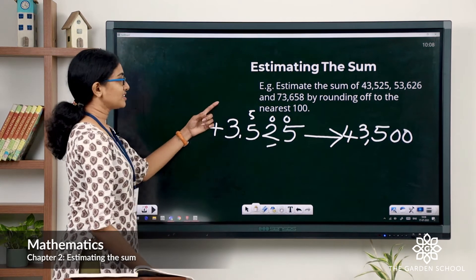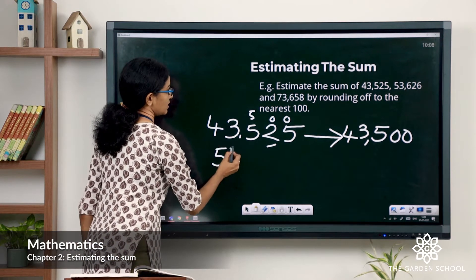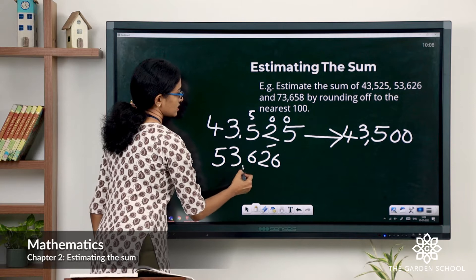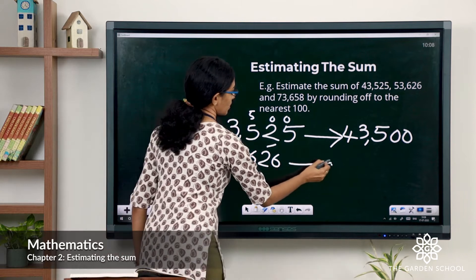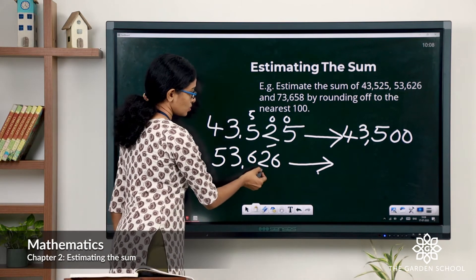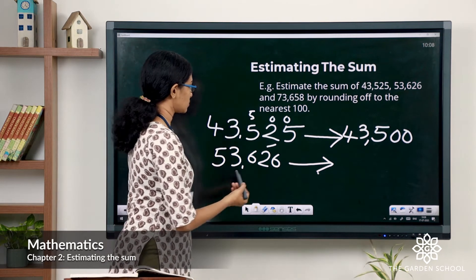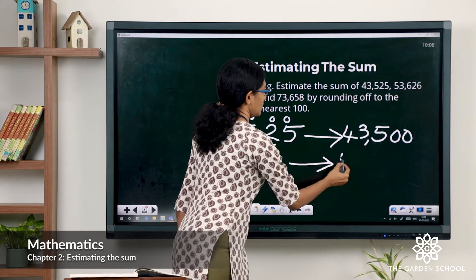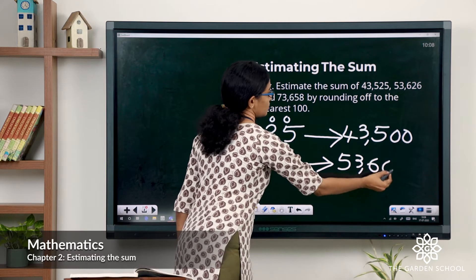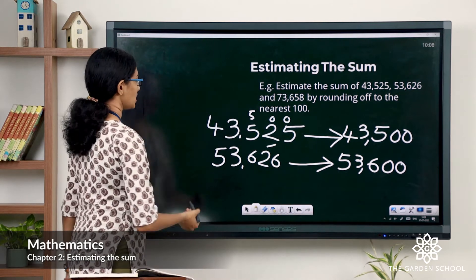Now what about the other two addends? 53,626 rounded off to the nearest 100: here the digit to the right of the hundreds digit is 2, so the rounding digit stays as it is, and tens and ones are changed to zeros as well. So it's 53,600.